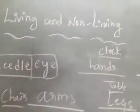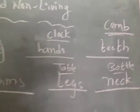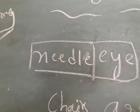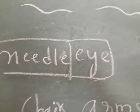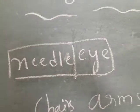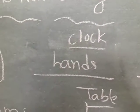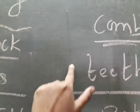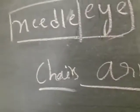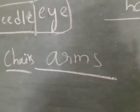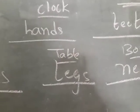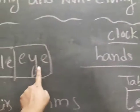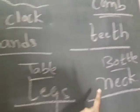Needle, chair, clock, table, comb, and bottle - these are the non-living things. But their body parts are named after living things. Needle - eye: we can see, needle has an eye. Clock - hands: hours, minutes, and seconds hands. Comb - teeth. Chair - arms. Table - legs. These body parts belong to living things: eye, hands, teeth, arms, legs, neck.